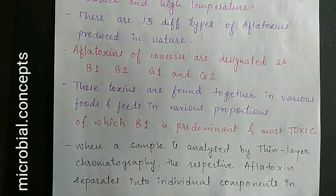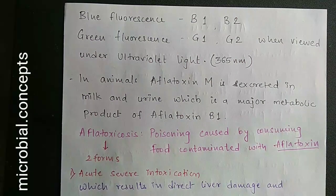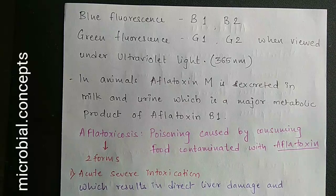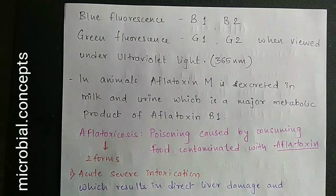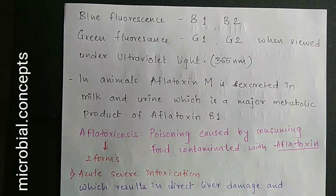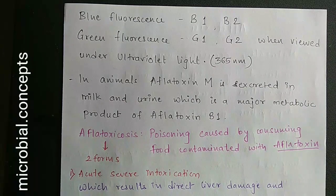These toxins are found together in various foods and feeds in various proportions, of which B1 is predominant and most toxic. When a sample is analyzed by thin layer chromatography, the respective aflatoxins separate into individual components showing blue or green fluorescence. When viewed under ultraviolet light at around 365 nanometers, you can identify separated spots. Depending on their RF values and fluorescence, you can determine which aflatoxins are present.